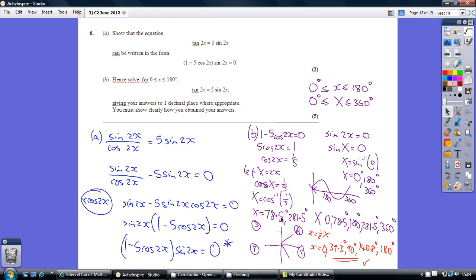So using our calculator we get our first solution of 78.5. Now we need to adjust our boundaries, remember our limits. So capital X boundaries are twice as big. So they're going from 0 to 360.